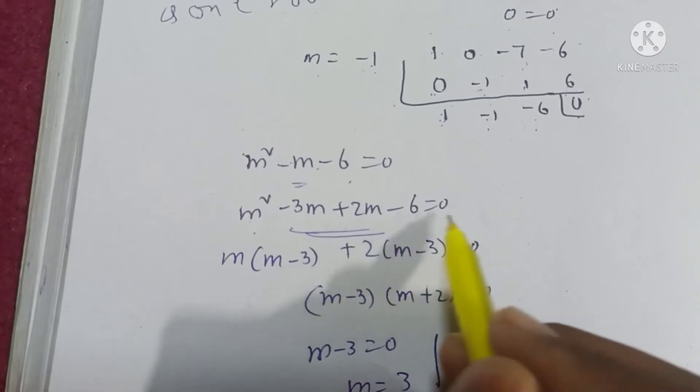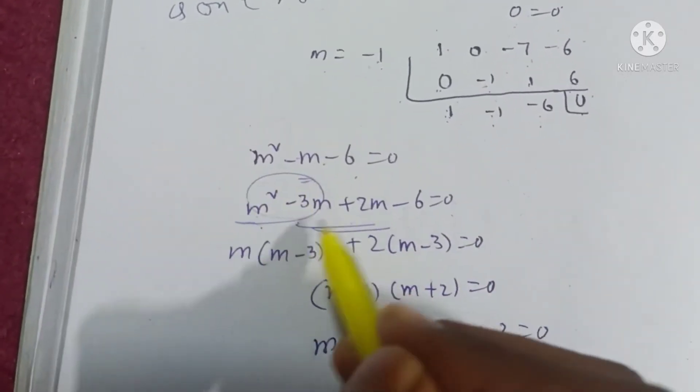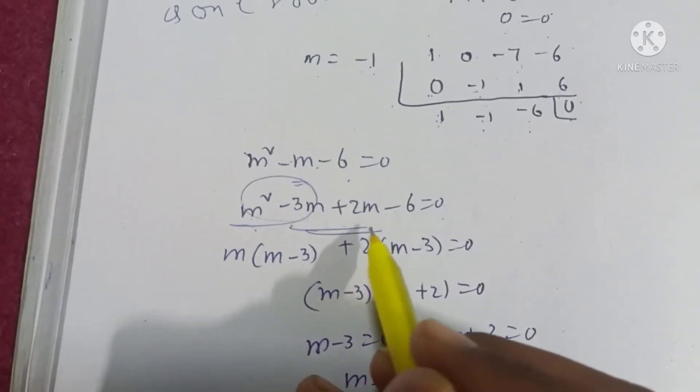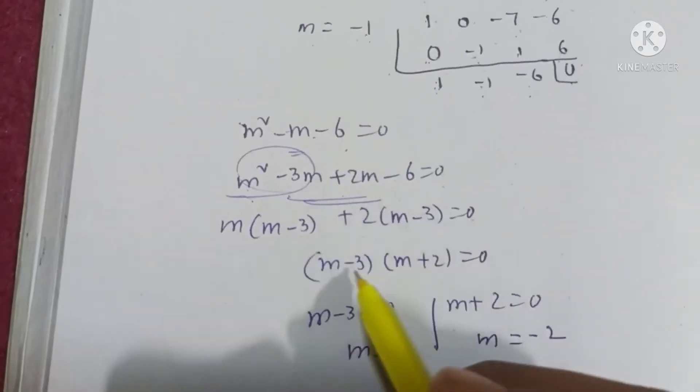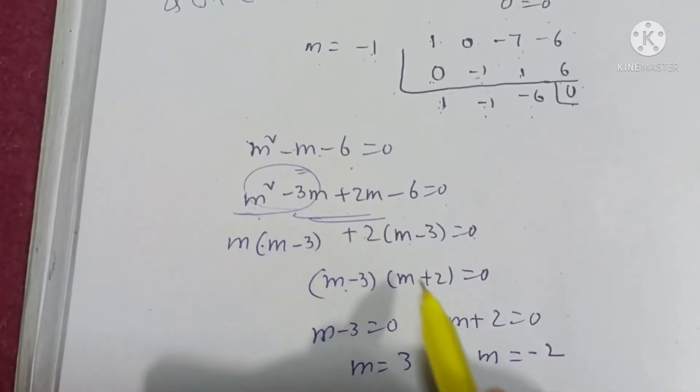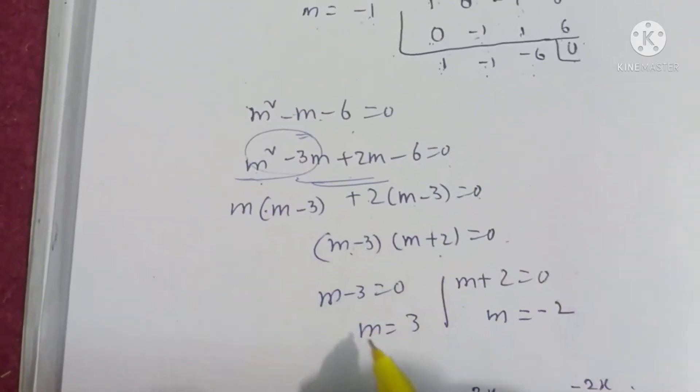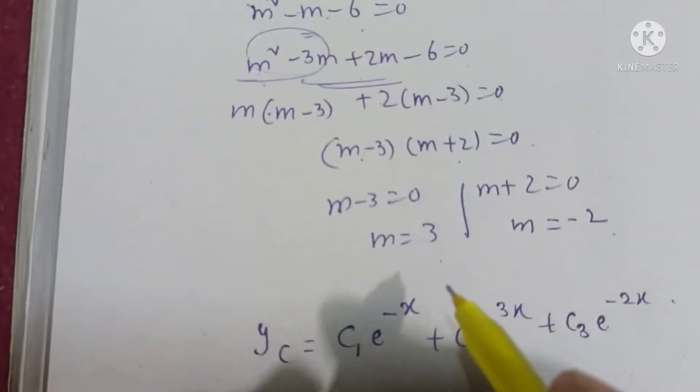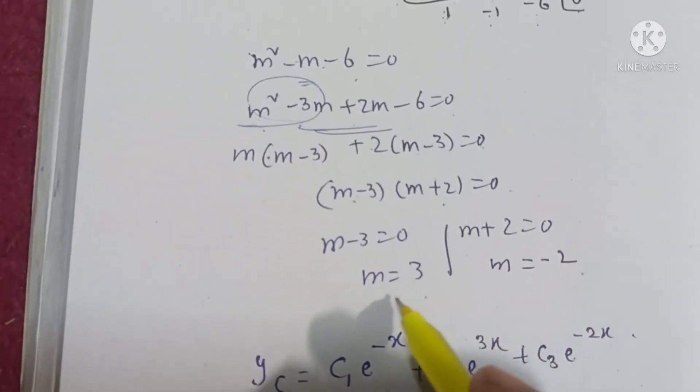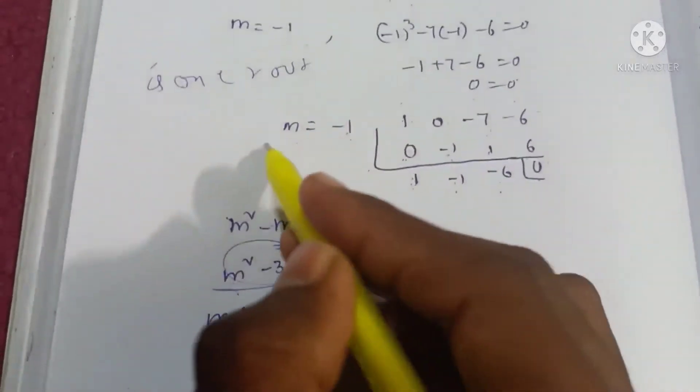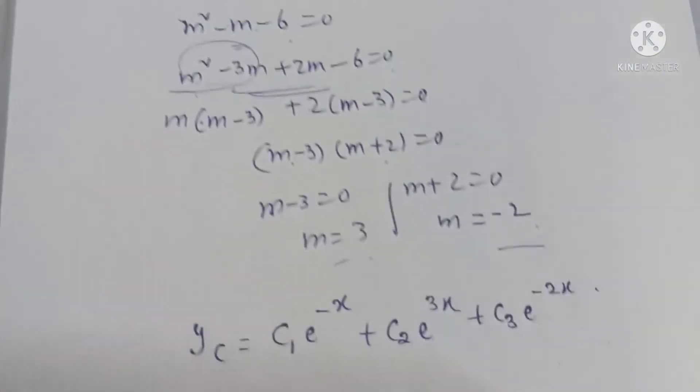Now for m², we get m² - 3m - 6 = 0. Factoring: m² - 3m + 2m - 6 = (m - 3)(m + 2) = 0. So m = 3 or m = -2. We have 3 real different roots.